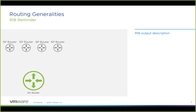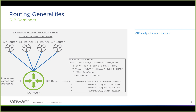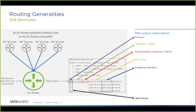Here we can see four service provider routers advertising the same default route to the data center router using EBGP. In that case, the administrative distance on the DC router would be exactly the same. Looking at the show IP route output, we have the network prefix 0.0.0.0/0, the AD and metric is 20/0, the next hops are different so we can leverage different uplinks, and the outgoing interfaces are different as well. The asterisk in the show IP route shows that these four entries are considered the best route, so we are leveraging ECMP.